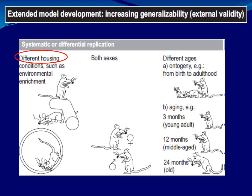For differential or systematic replication, we change the housing environment, use both sexes instead of one, and apply different age groups — young adults, middle-aged, and old animals. This allows us to assess whether the same intervention produces the same results across different ages and sexes, moving toward generalizability.